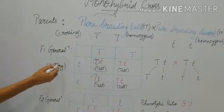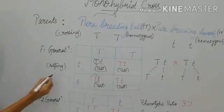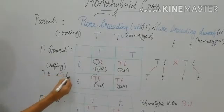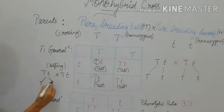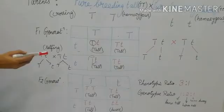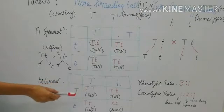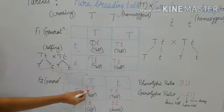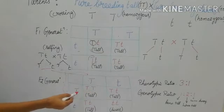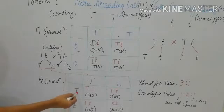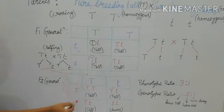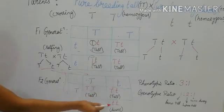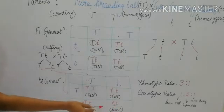This is the F1 generation. When we self this F1 generation — heterozygous crossed with heterozygous — the gametes produced are one with the dominant allele and another with the recessive allele. Plotting the F2 generation on the Punnett square, the result is: one will be homozygous tall (capital T capital T), two will be heterozygous tall (capital T small t), and one will be homozygous dwarf (small t small t).